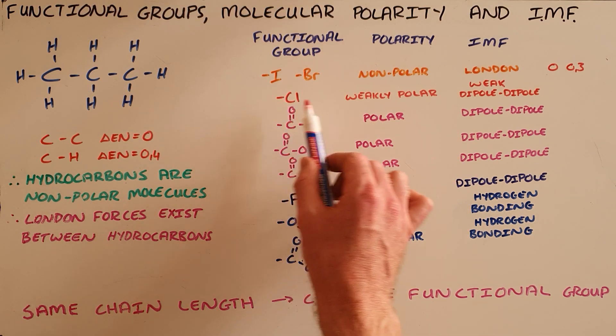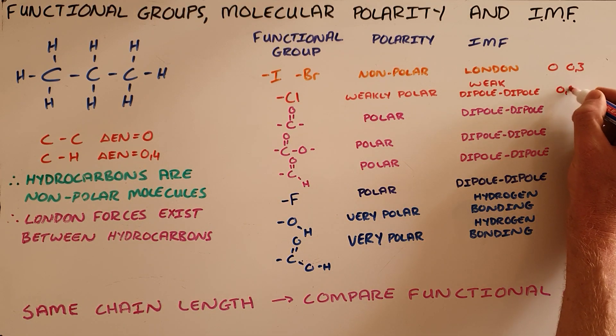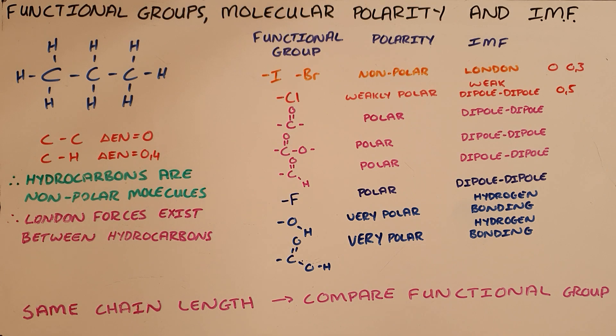The chlorine functional group is said to be weakly polar because it has an electronegativity difference of 0.5. As a result of this weak polarity, we say that the intermolecular forces that exist between molecules that contain this group are weak dipole-dipole forces.